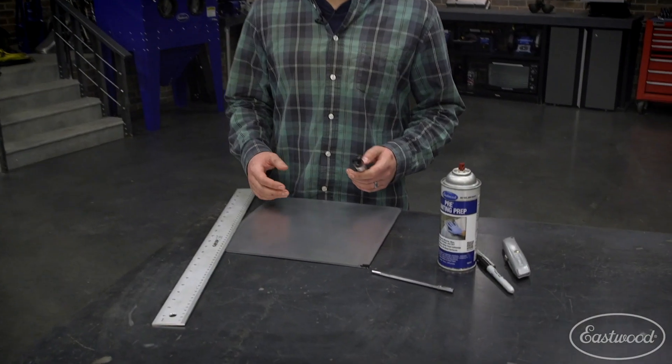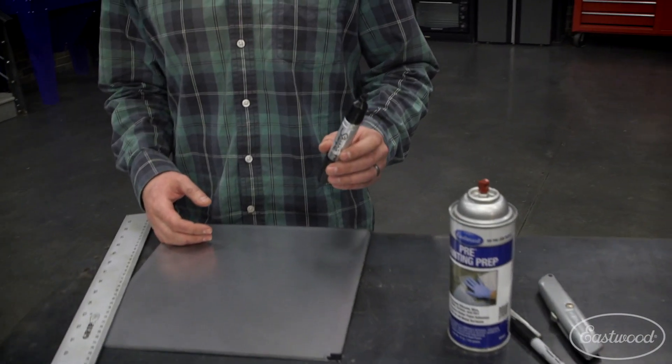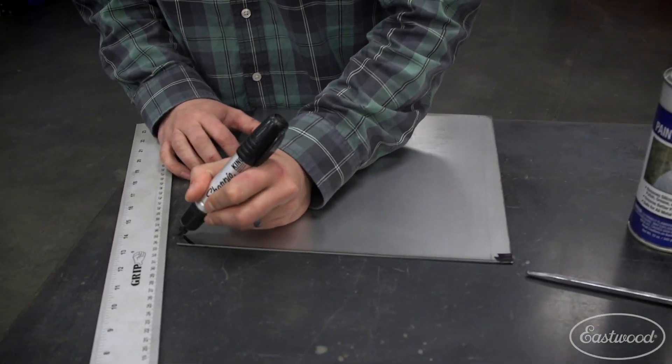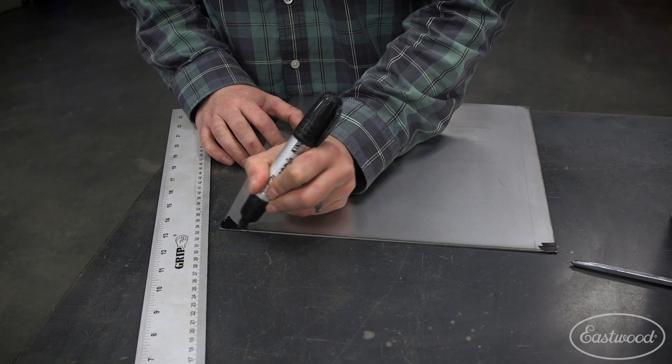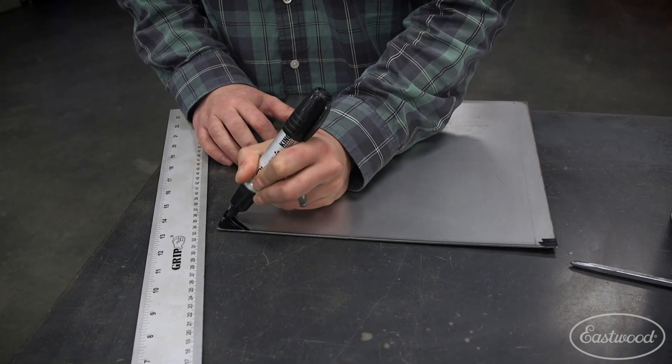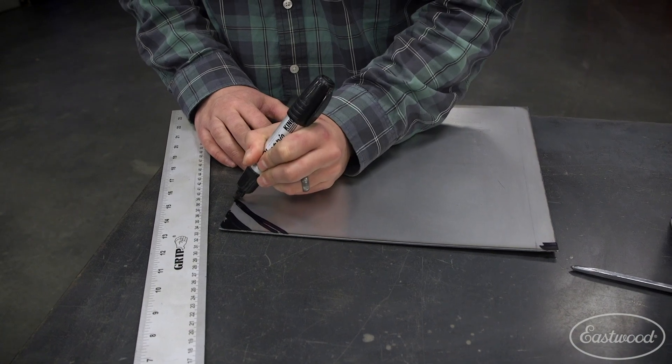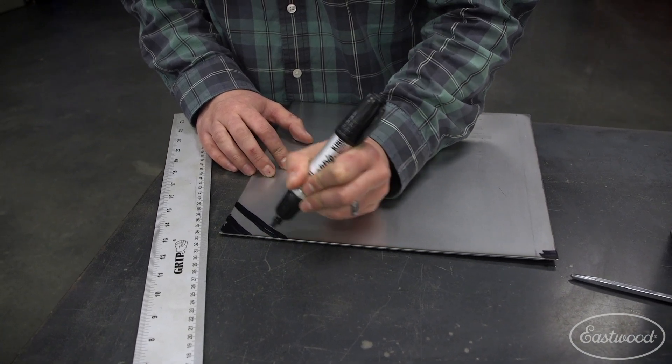Instead of using die cam or layout fluid, just keep a big thick Sharpie around. This is going to let you mark up a panel without having to spray it everywhere, and you're going to have quick, easy cleanup as well.